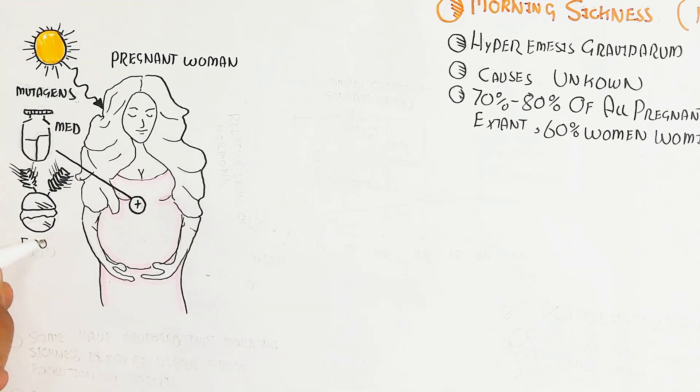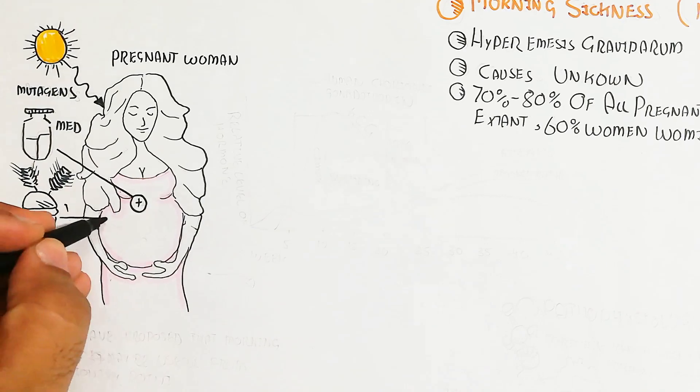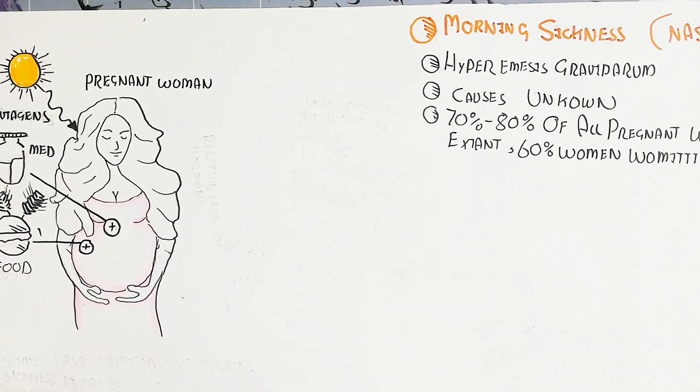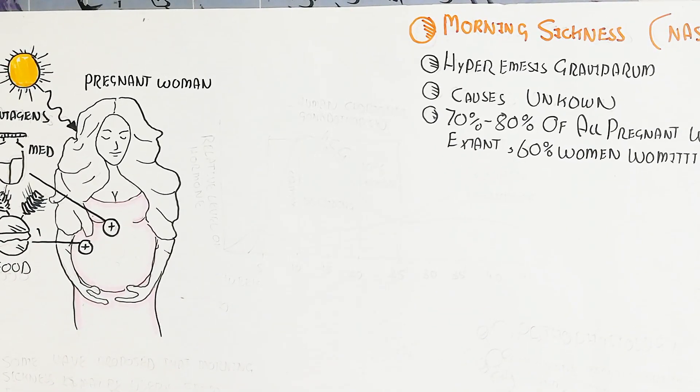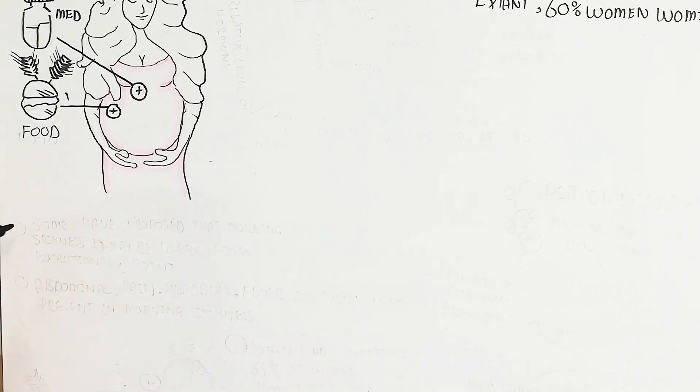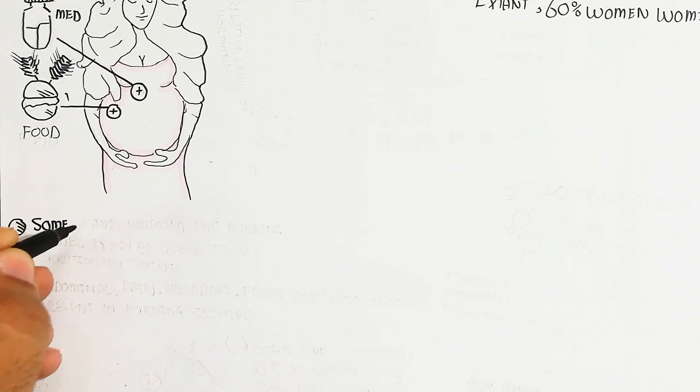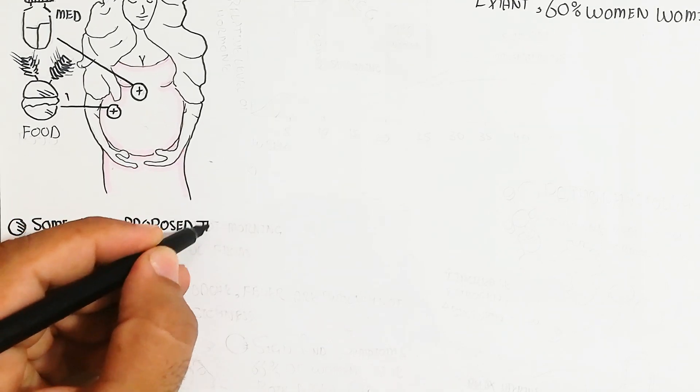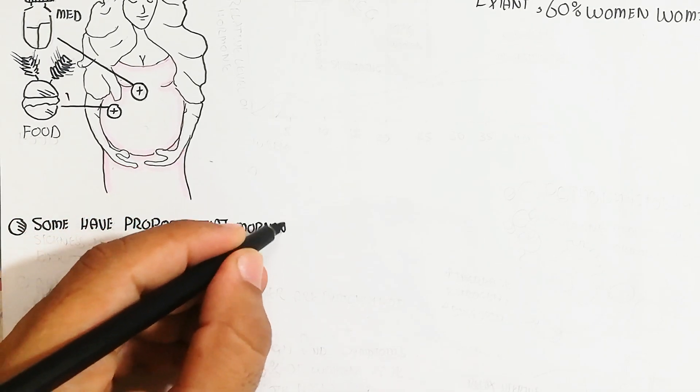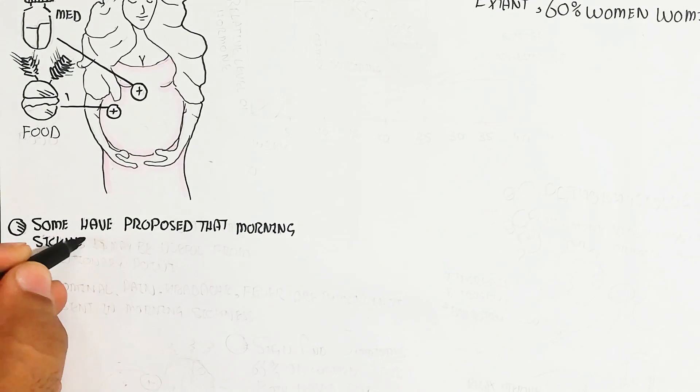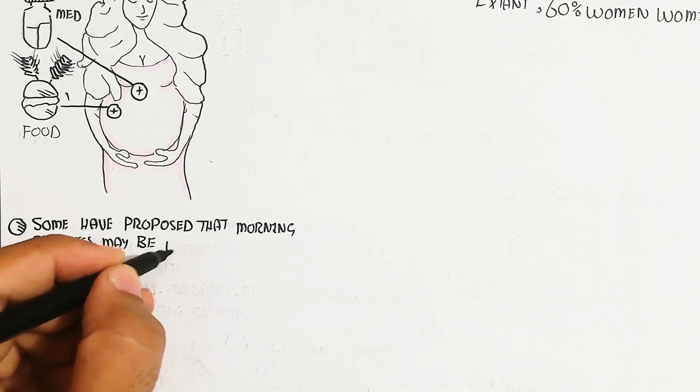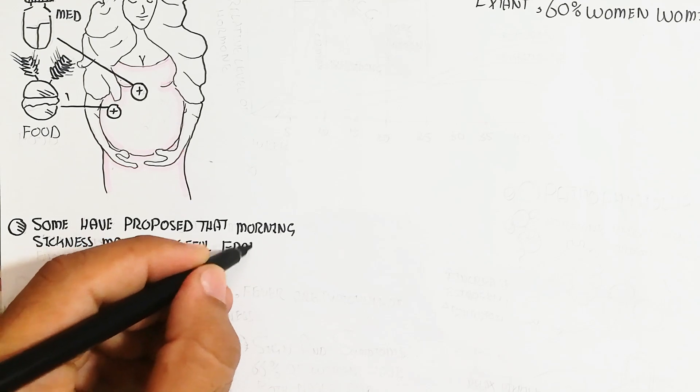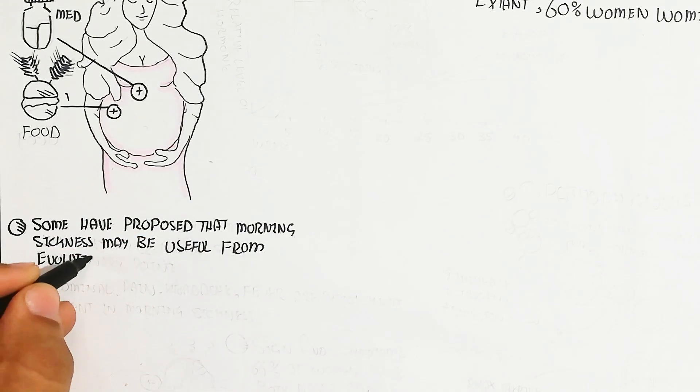A lot of other factors can be involved, like low level of oxygen and high metabolism. Some have proposed that morning sickness may be useful from an evolutionary point, because the fetus development requires immunosuppressive activity.